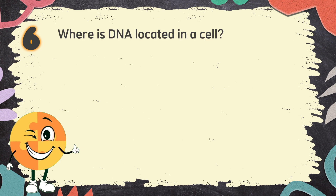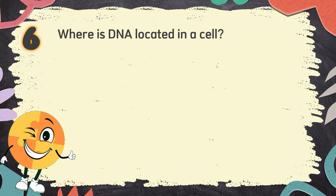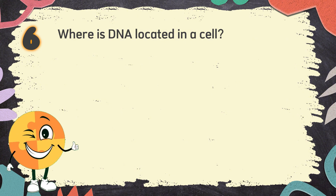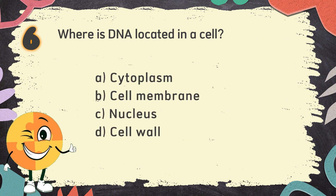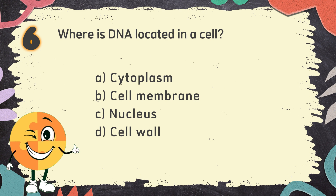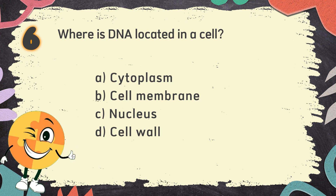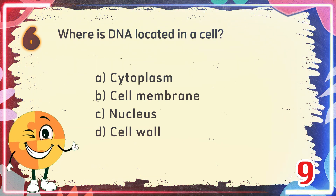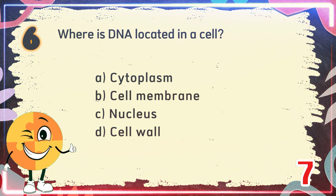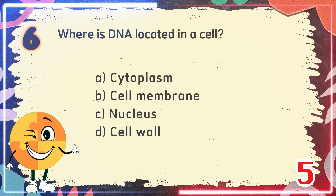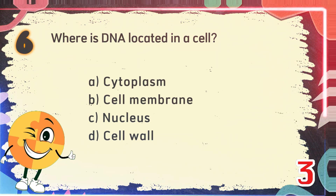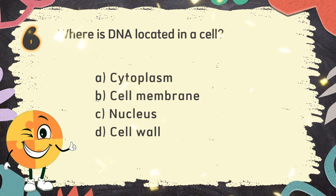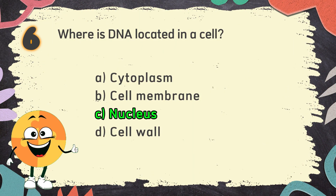Number 6. Where is DNA located in a cell? The choices are A. Cytoplasm, B. Cell membrane, C. Nucleus, D. Cell wall. The correct answer is C. Nucleus.